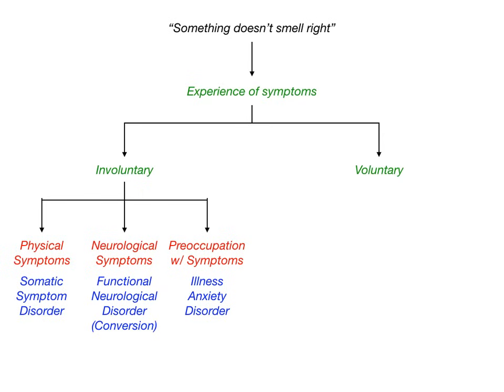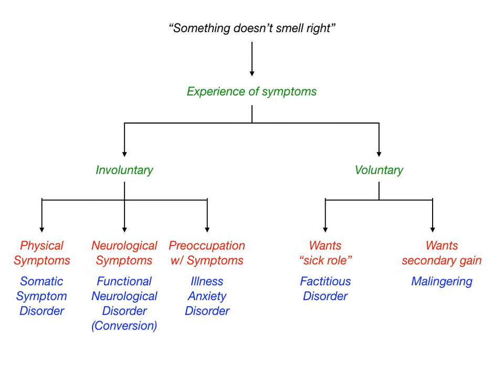On the other side of the flowchart, we have the voluntary experience of symptoms that don't smell right. The question with voluntary symptoms is: which of two disorders is it? Does the patient want to be in the sick role — if so, it's factitious disorder. Or does the patient want some type of secondary gain, such as compensation, disability insurance, or escaping jail time — if so, it's malingering. That's the overview of the full flowchart.